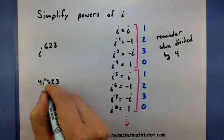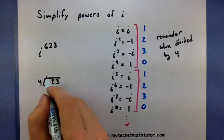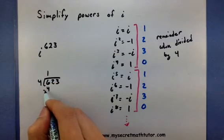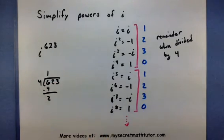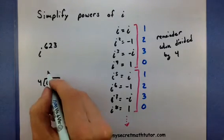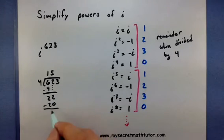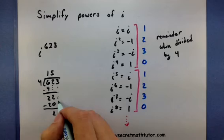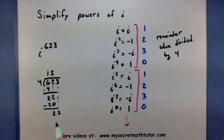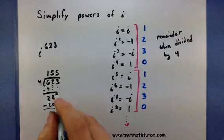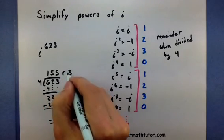623 divided by 4. So 4 goes into 6 once. Subtracted away, we'll get a 2. Bring down the other 2. 4 goes into 22 five times. That'll give us a 20. Subtract that away, I'll get a 2, and bring down my 3. So 4 goes into 23 five times. And then I'm just left with 3, so 3 is my remainder.